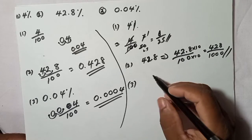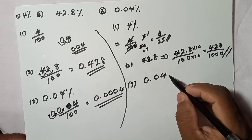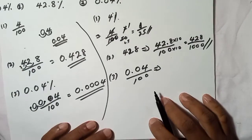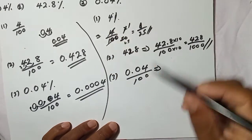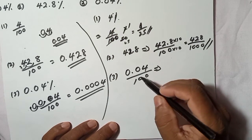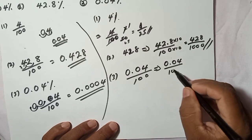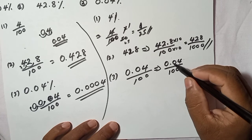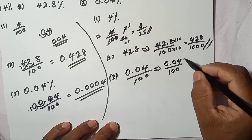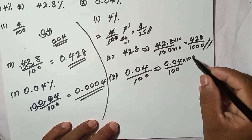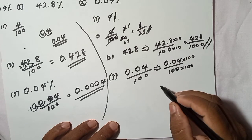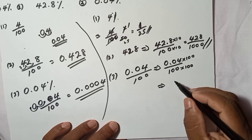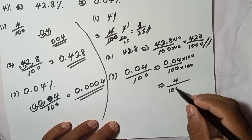For 0.04% as a fraction: write 0.04 over 100. To remove the decimal, since there are two digits after the decimal point, multiply both numerator and denominator by 100. Moving the decimal point two places to the right gives 4 in the numerator and 10000 in the denominator, so the answer is 4 over 10000.